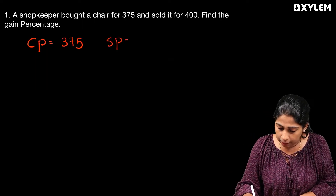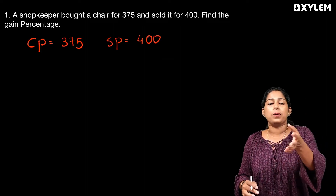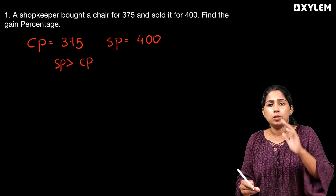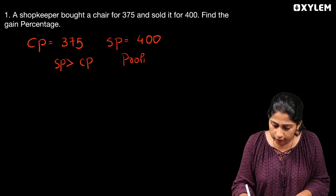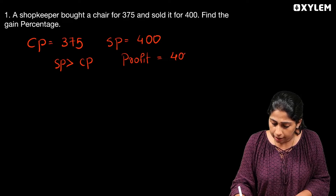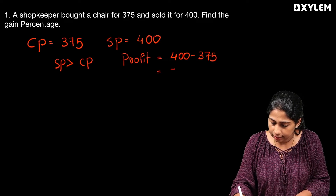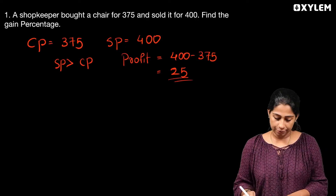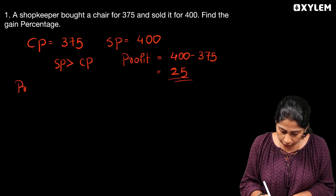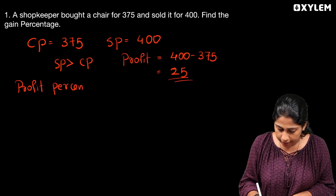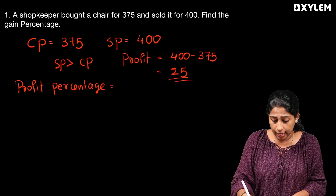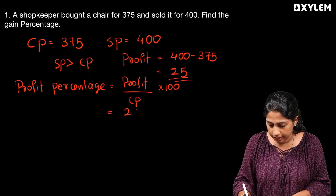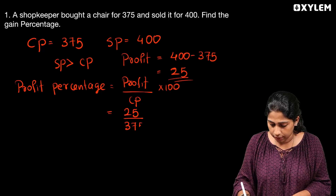The selling price is 400 rupees. The cost price is 375 rupees. Find the gain percentage. Since SP is greater than CP, there is a profit. Profit equals 400 minus 375, which equals 25 rupees. Profit percentage equals 25 divided by 375 into 100.